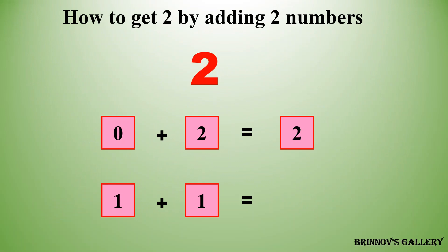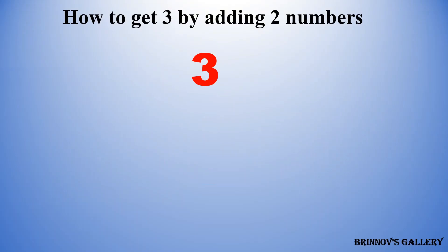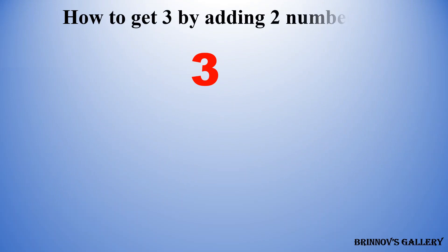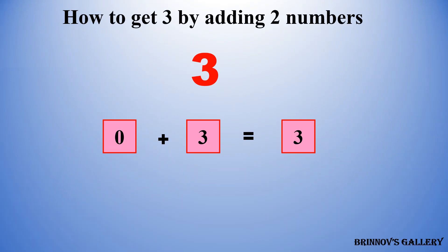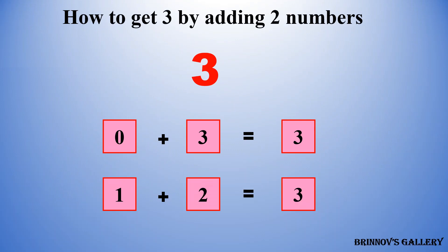How to get 3? By adding two numbers. 0 plus 3 is equal to 3. 1 plus 2 is equal to 3.